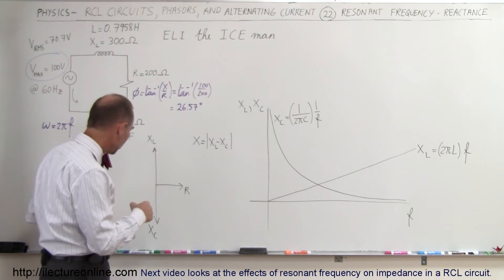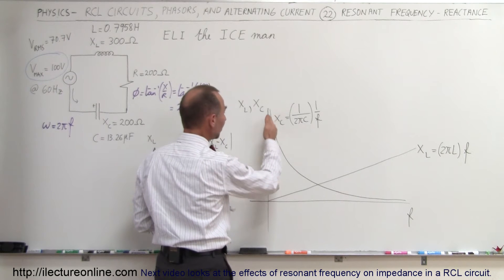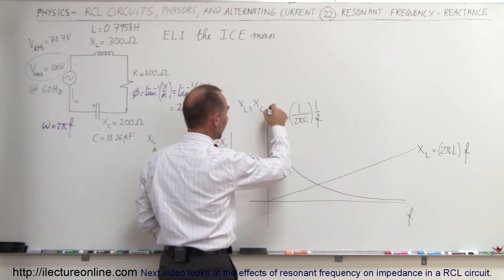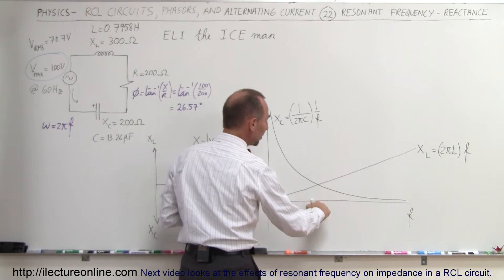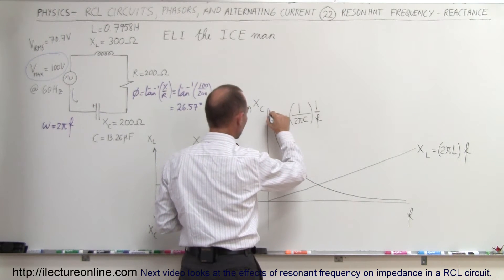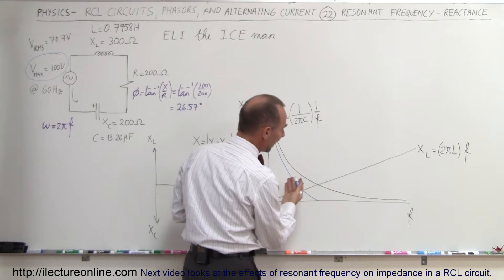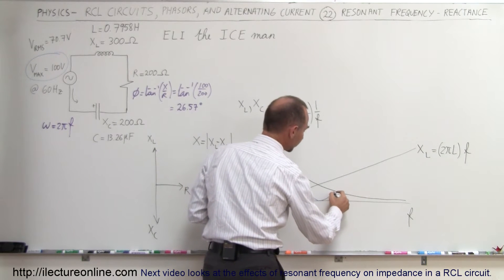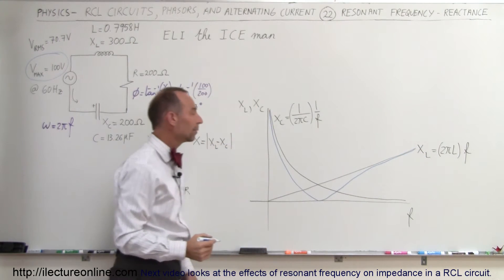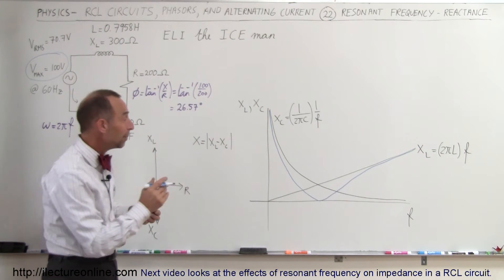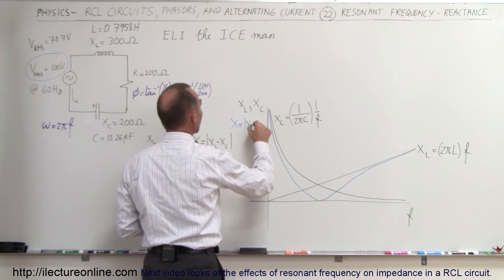If we now grab the total reactance, you can see that at very low frequencies it's going to be predominantly the capacitor reactance. But when you start subtracting and they become equal in value, the difference will be zero. So that means that this curve will go to zero when we get to that point, and then it'll start increasing again and eventually asymptotically reach the X sub L line. That blue line represents the total reactance X, which is equal to the absolute value of X sub L minus X sub C.